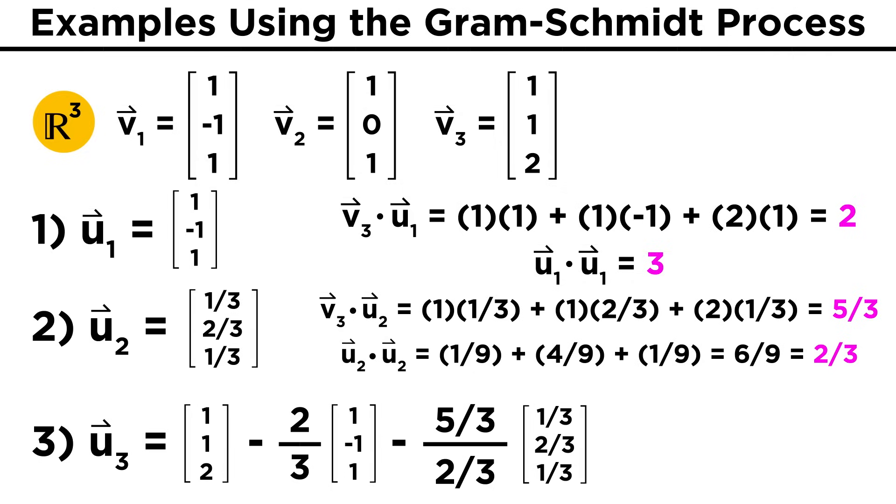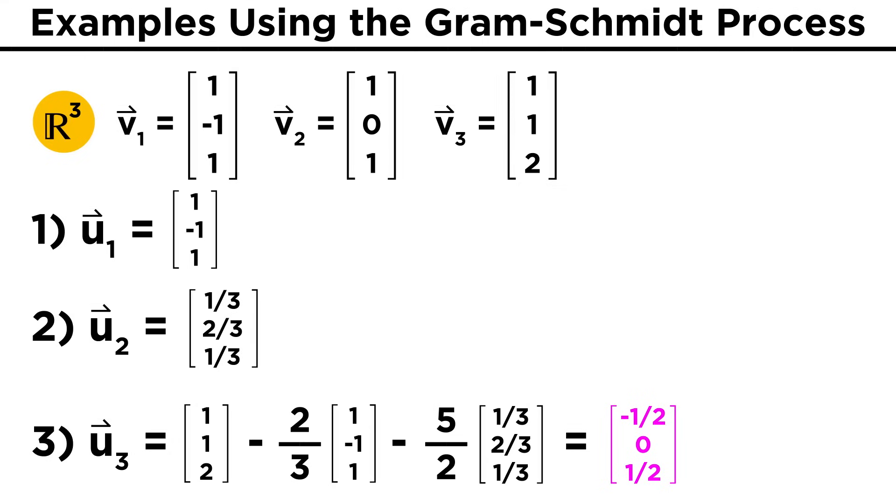Plugging in all these dot products, we get u3 equals one, one, two, minus two thirds times one, negative one, one, minus five thirds over two thirds, which simplifies to five halves, times one third, two thirds, one third. Lastly going through the vector addition, we end up with u3 equals negative one half, zero, one half.